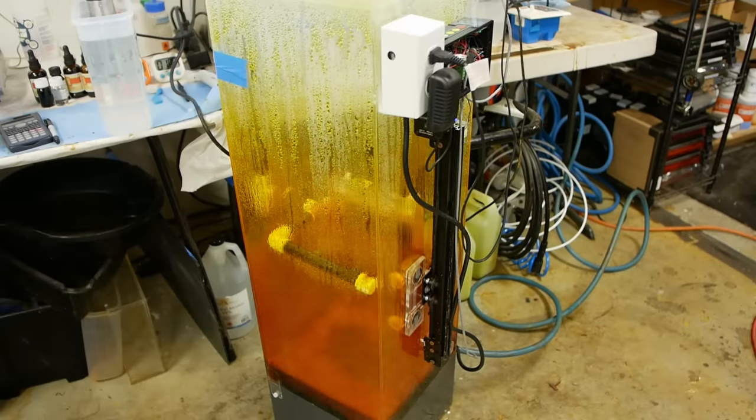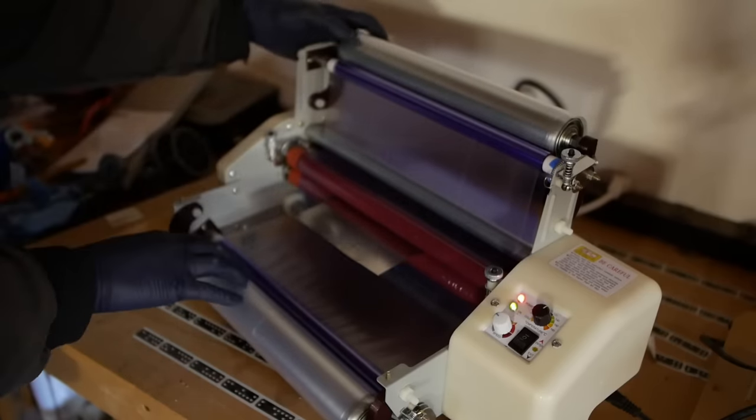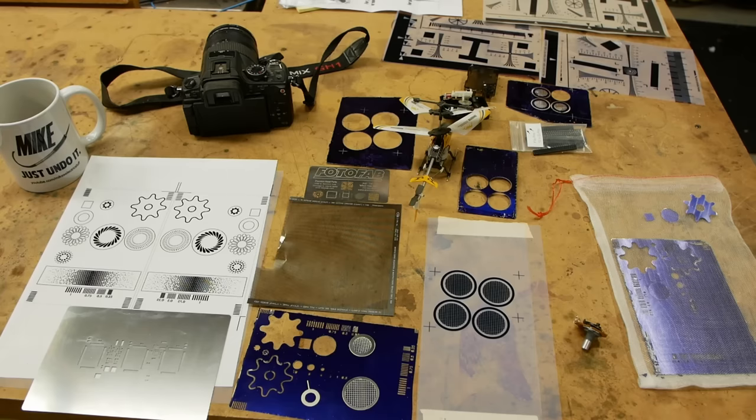So I ended up building my own etching machine, laminated my own photo resist onto the metal and went through the whole process and made these special parts for another person for a secret project and still came out ahead, spent less money than I would have with one of the big vendors.